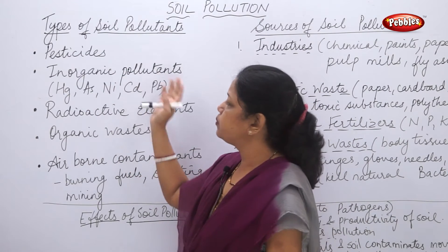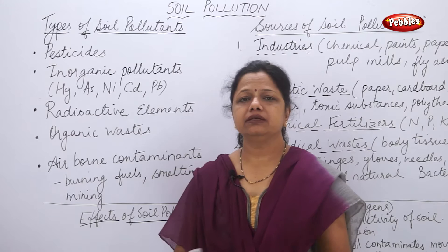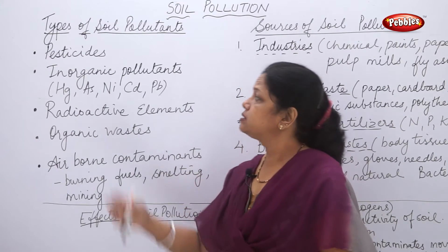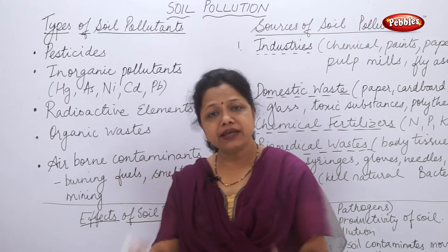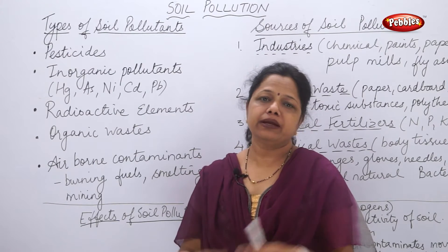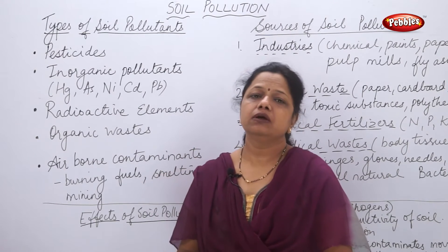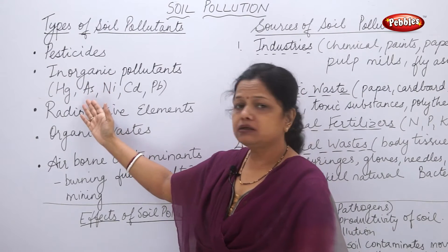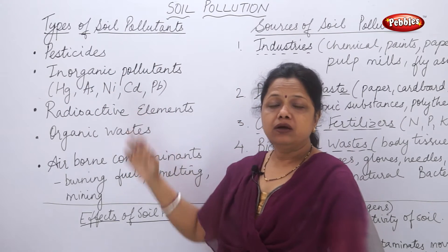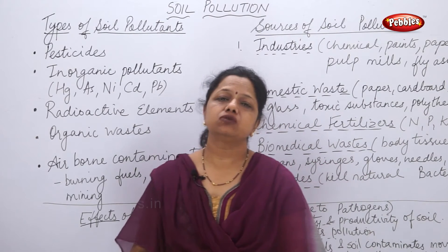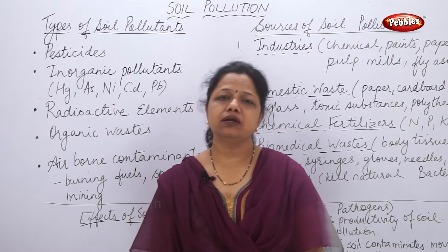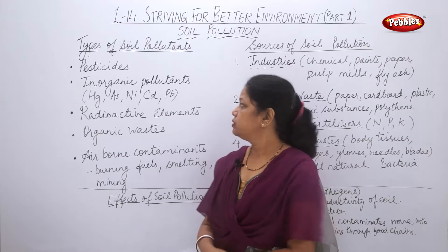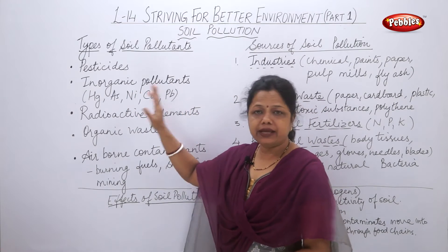The second type is inorganic pollutants. Many factories and industries use a number of elements — metals, non-metals, and metalloids. These inorganic pollutants get mixed with the soil in some way or the other, either through a gaseous state or through sewage. These inorganic pollutants may contain mercury, arsenic, nickel, cadmium, and lead, which bring too much toxicity to the soil. They may change the pH value of the soil and create large problems for organisms living in it.